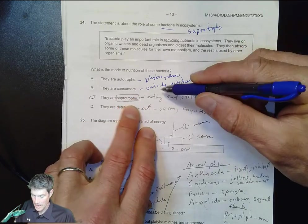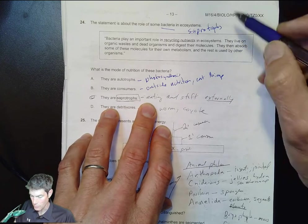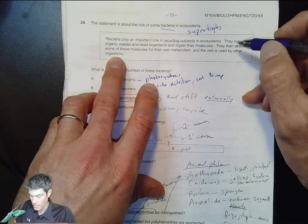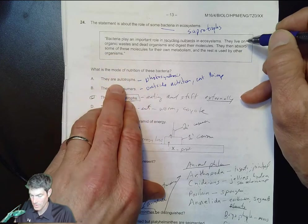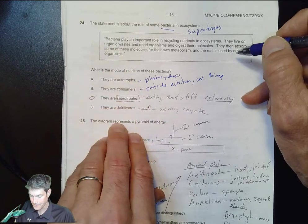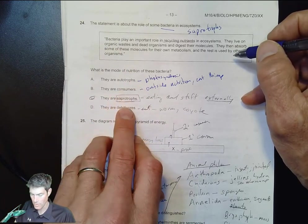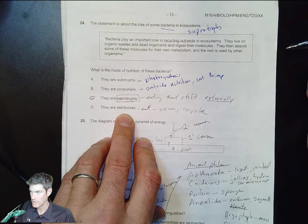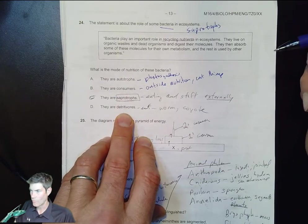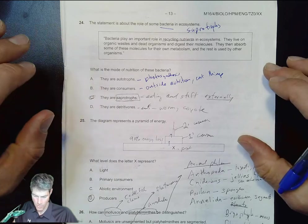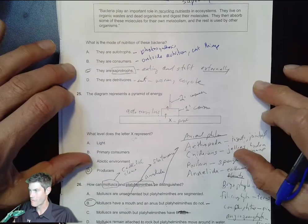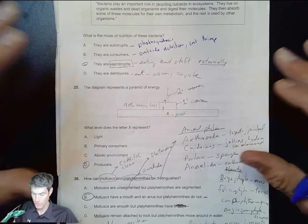Saprotrophs are eating dead stuff externally - they absorb some of the molecules they live on the waste. Remember detritivores are things like worms, coyotes, vultures, California condor which is coming back.